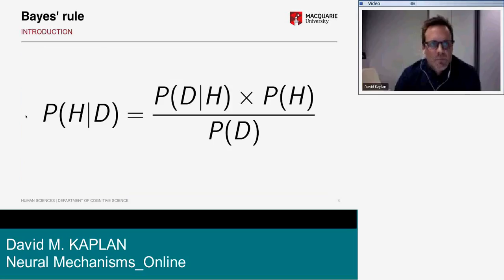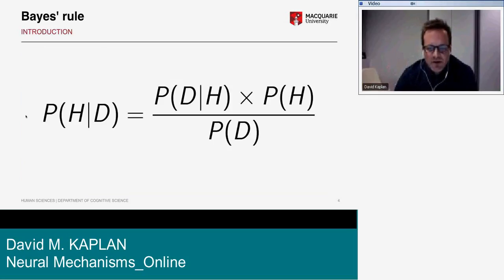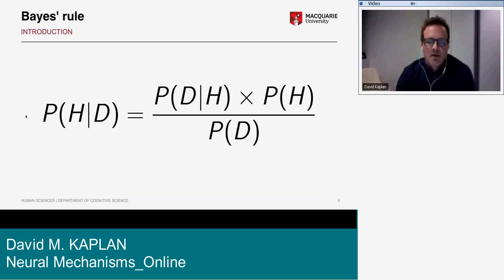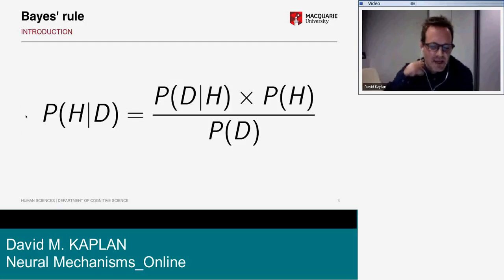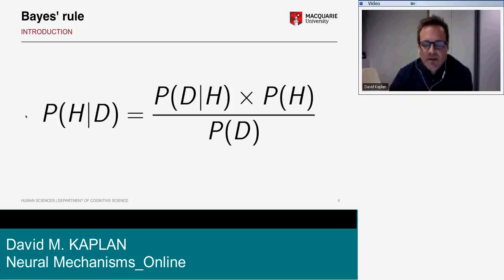Bayes rule is probably familiar to most of you, so I'll just briefly cover it by way of background. Bayesian inference is a type of statistical inference where data or new information is used to update the probability that a given hypothesis is true. A system performs Bayesian inference if it applies Bayes rule to update the probability that hypothesis H is true given some data D.